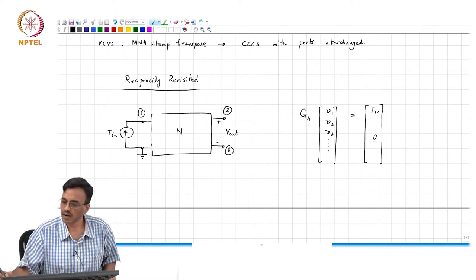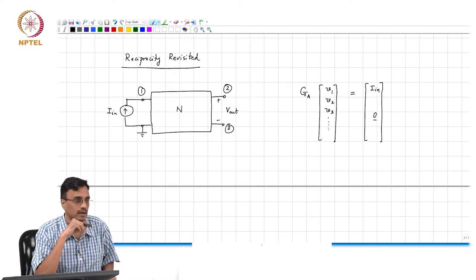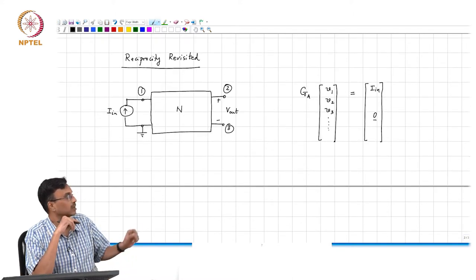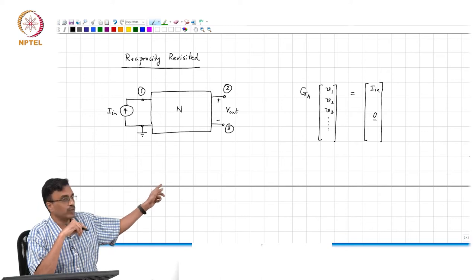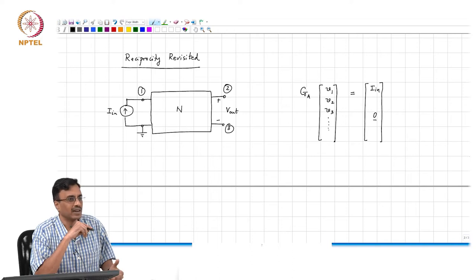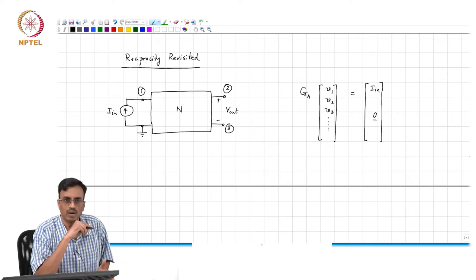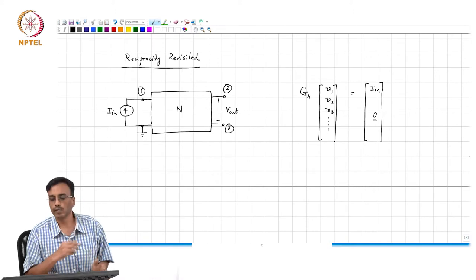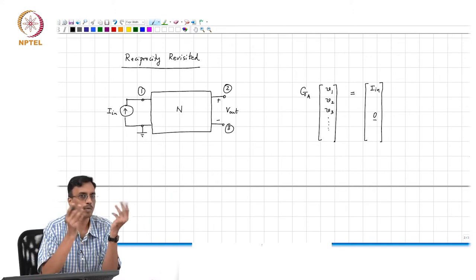And we are interested in what? We are interested in finding the transfer function from I_n to V_out. So what will we do? How will we go about doing this?